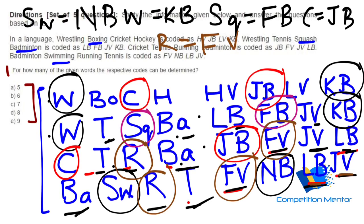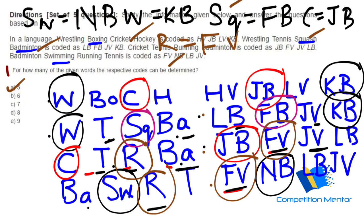Just keep an eye that you are covering everything. You can see these three statements all have the same things left — T, R, and BA — and then B-O and H remain unsolved. So how many can you solve? One, two, three, four, and five of them. So the answer should be A — five words can be determined. Once you decode this chart, it won't take a lot of time and will fetch you a lot of marks.